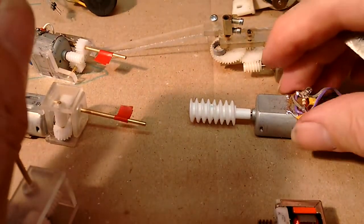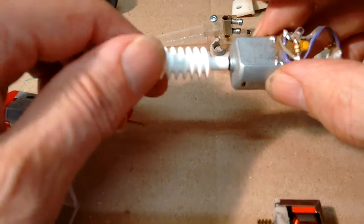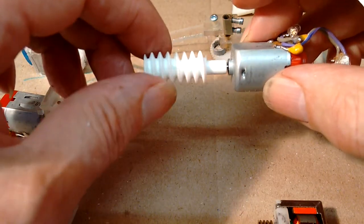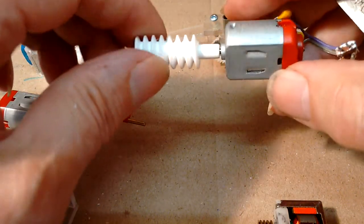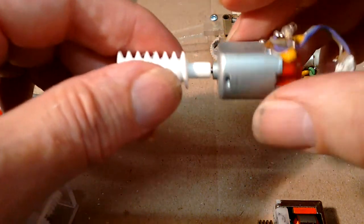So what we have then is our worm gear here. This is sort of thing that could be made on a 3D printer. I've seen them this sort of size.